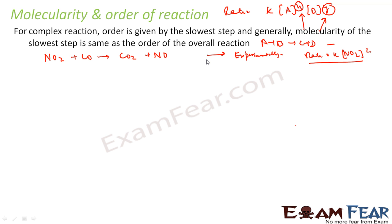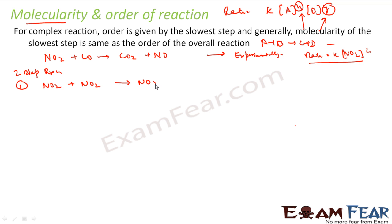This is a complex reaction — a two-step reaction. In the first step: NO2 + NO2 → NO3 + NO. In the second step: NO3 + CO → CO2 + NO2.